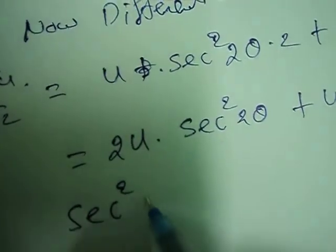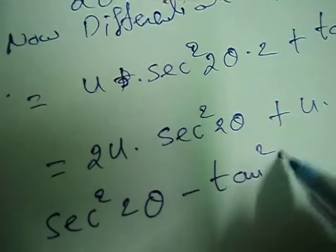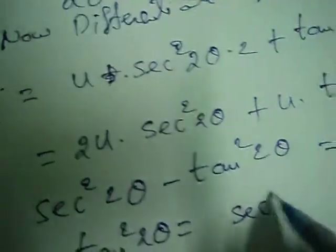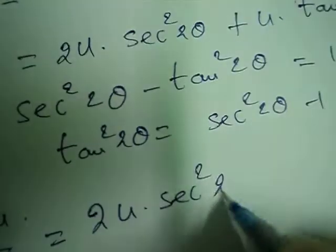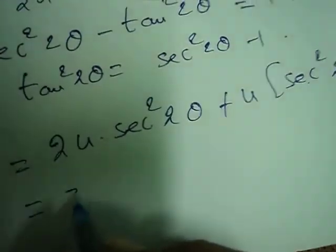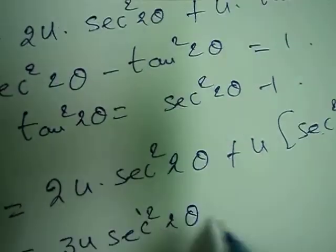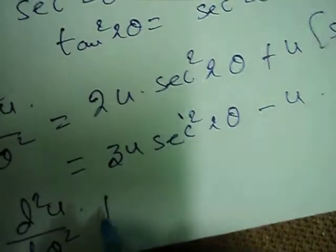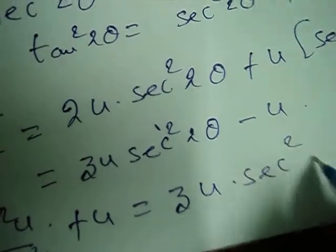We know sec²(2θ) − tan²(2θ) = 1, so tan²(2θ) = sec²(2θ) − 1. Substituting, d²u/dθ² = 2u·sec²(2θ) + u·(sec²(2θ) − 1) = 3u·sec²(2θ) − u. Therefore d²u/dθ² + u = 3u·sec²(2θ).